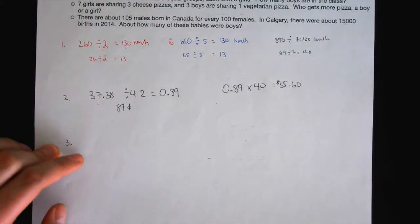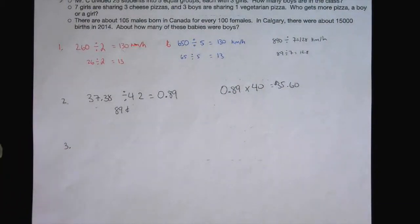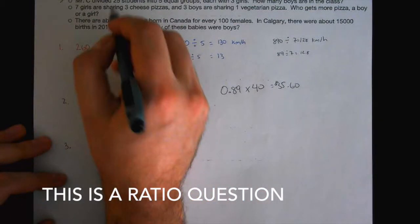Okay. Mr. C divided 25 students into five equal groups, each with three girls. How many boys are in the class? Before you tell me the answer, I'm not interested in the answer right now. What is this? What math concept is this? Who's it? Ratio. This is ratio.